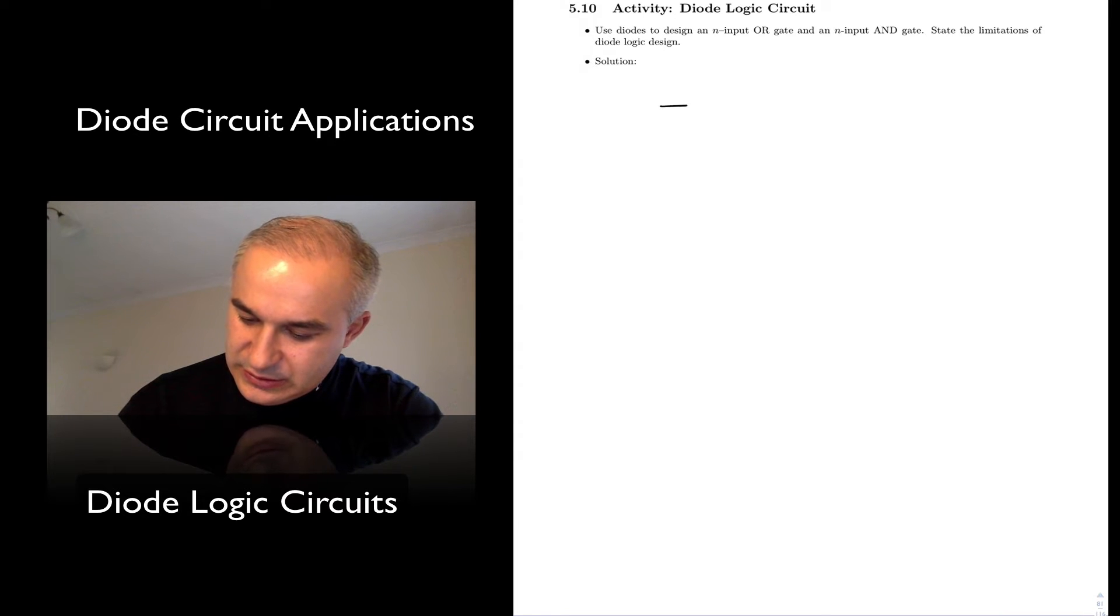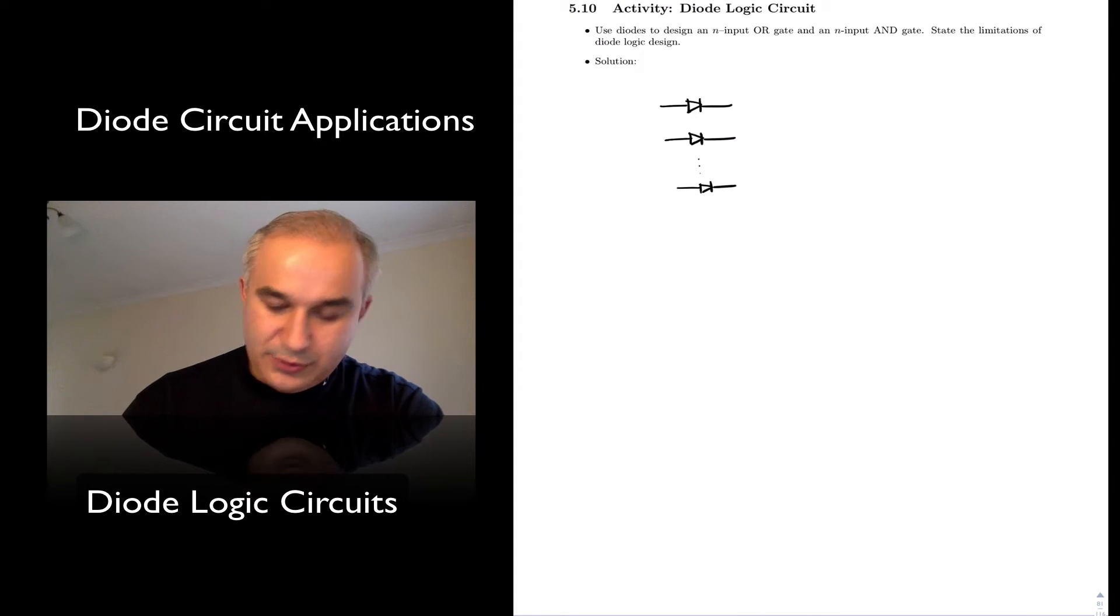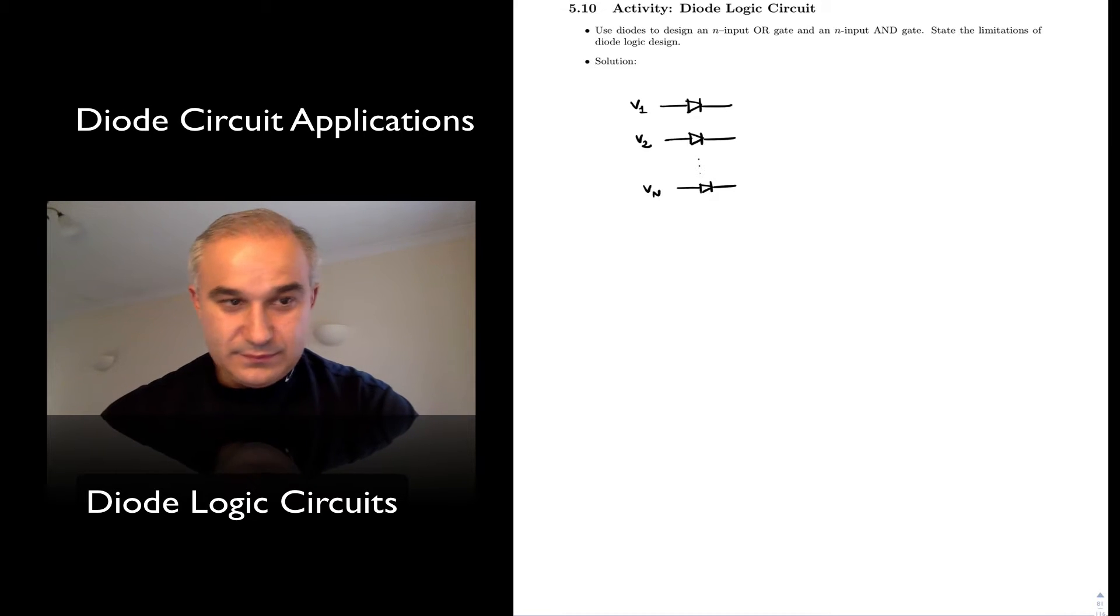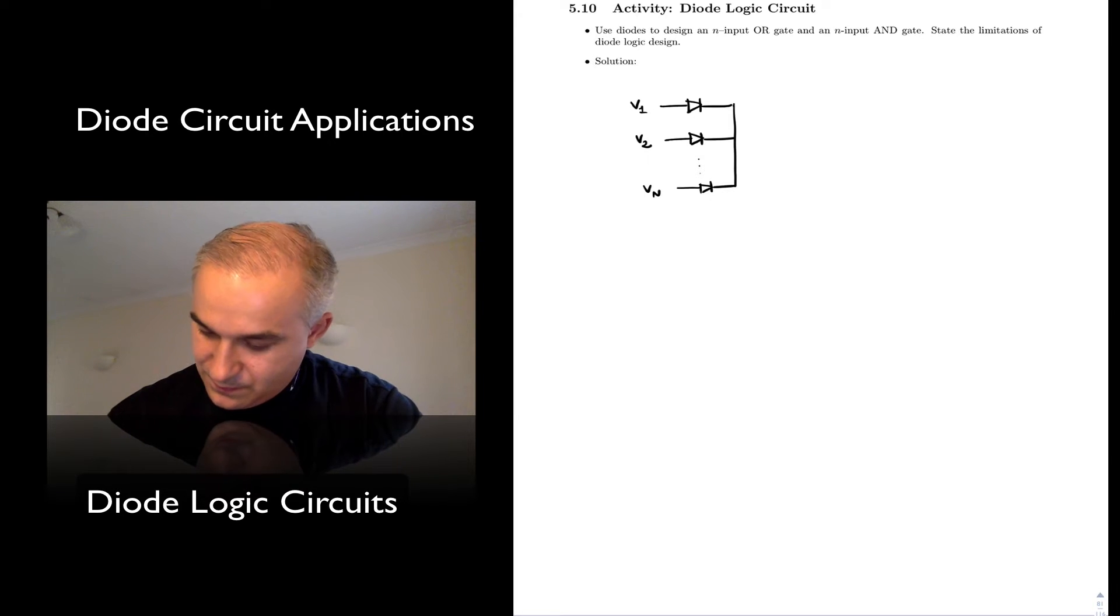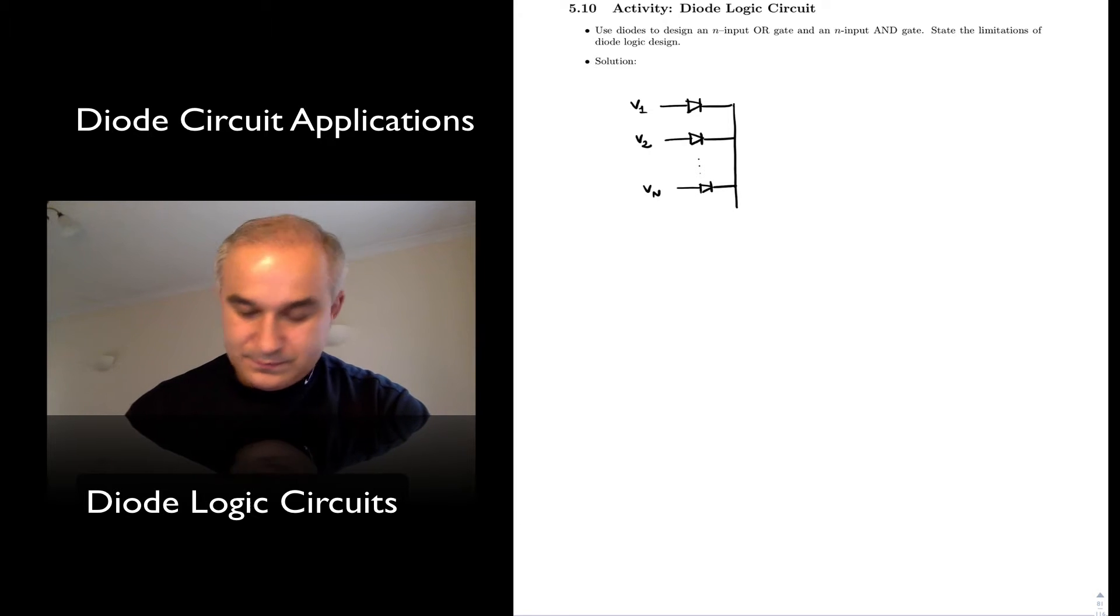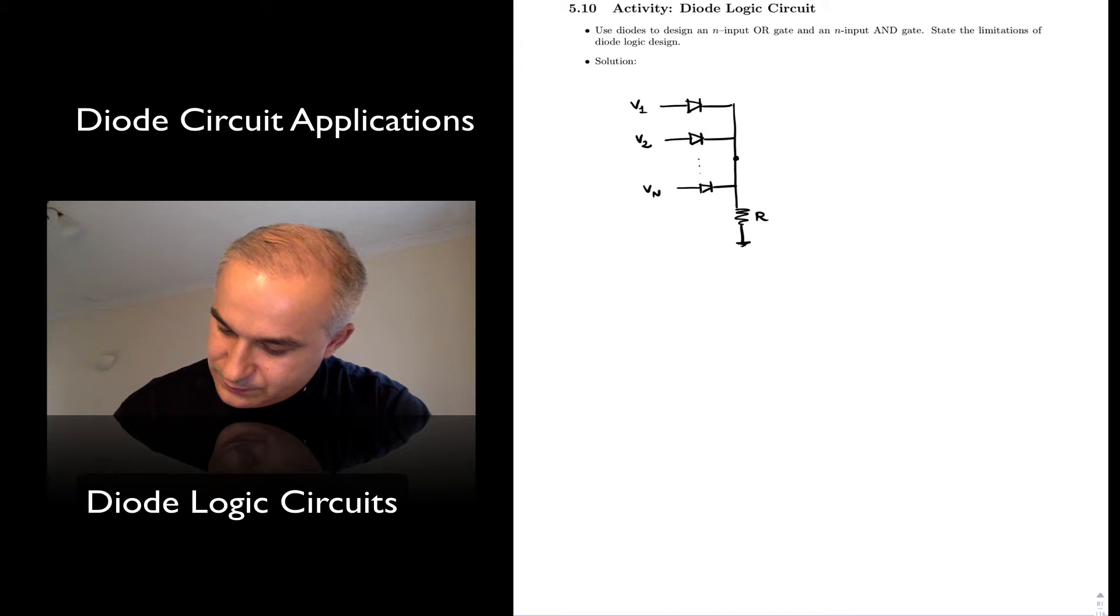If you notice, if we place diodes in parallel, I'm going to do a couple of diodes here. I'm going to call this V1, V2, all the way to Vn, parallel. Here we have a resistor to ground. This is our output voltage.